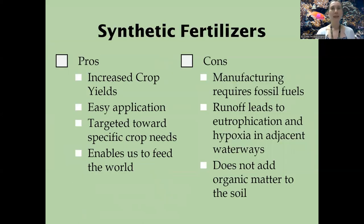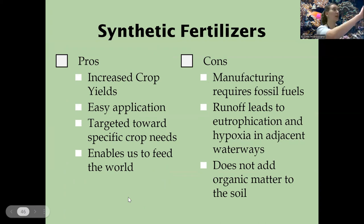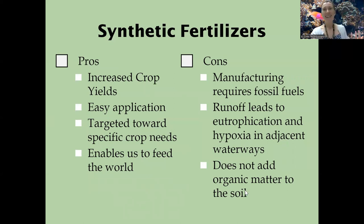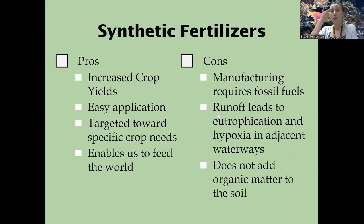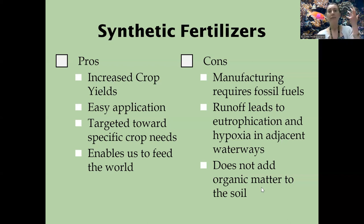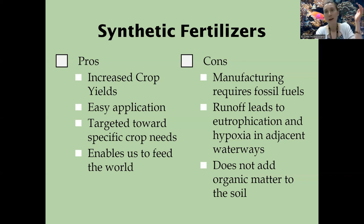Synthetic fertilizers increase crop yields, are easy to apply, cheap, and time-conserving. They enable us to feed the world as we project 9 to 11 billion people. However, the cons: we must manufacture them using fossil fuels, which release greenhouse gases contributing to global warming. We could also have a lot of runoff leading to eutrophication, since these fertilizers are packed with nitrogen, phosphorus, and potassium — that nitrogen and phosphorus runoff leads to algae bloom and high BOD. They also don't add organic matter to the soil. Pros and cons with everything in this class.